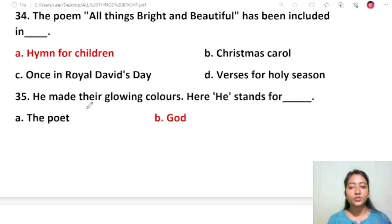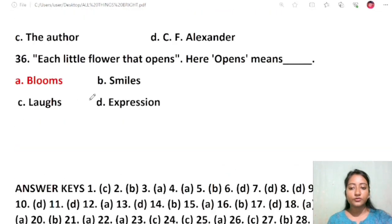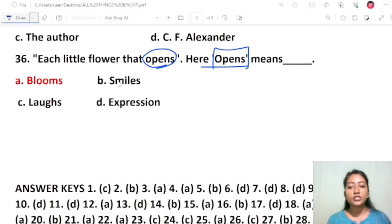Question 32: The poem All Things Bright and Beautiful has been included in Hymn for Children. Options were hymn for children, Christmas carol, Once in Royal David's Day, verses for holy season. Question 33: He made their glowing colors. Here 'He' stands for God. Bhagavan made the beautiful colors. Question 34: Each little flower that opens. Here 'opens' means blooms.